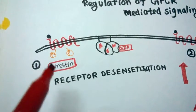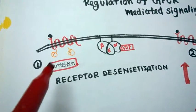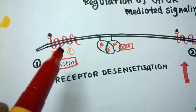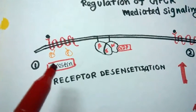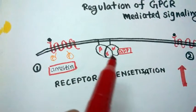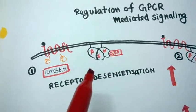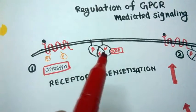As the name suggests, it actually arrests this GPCR, and this GPCR in arrestin bound form cannot bind to this trimeric G protein. As this GPCR cannot bind to the trimeric G protein, the further downstream signaling pathway cannot take place.